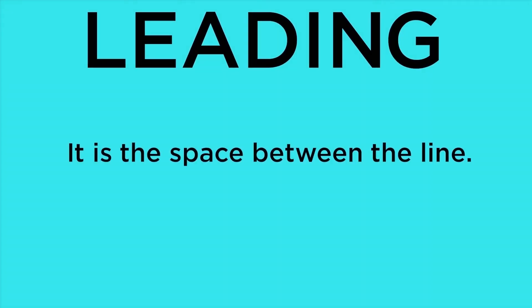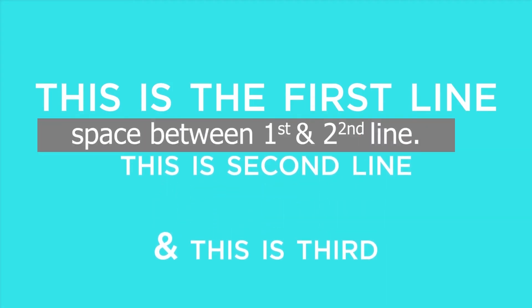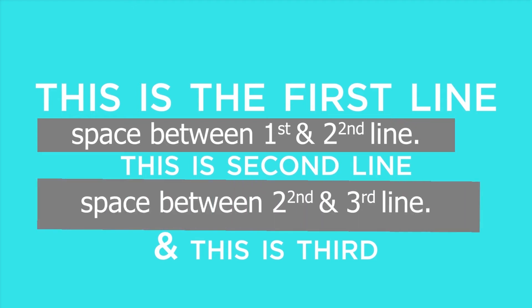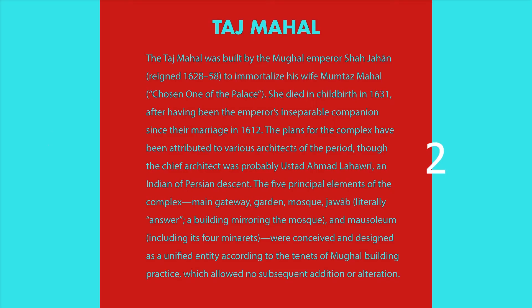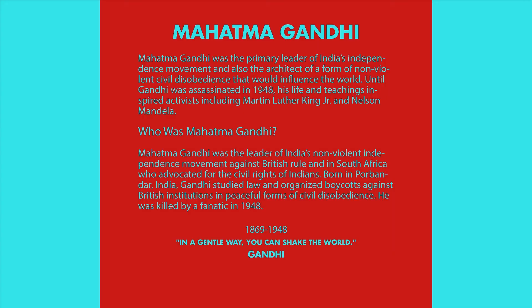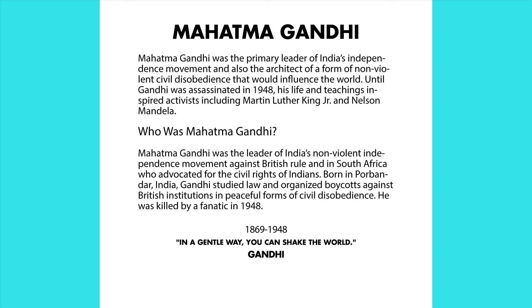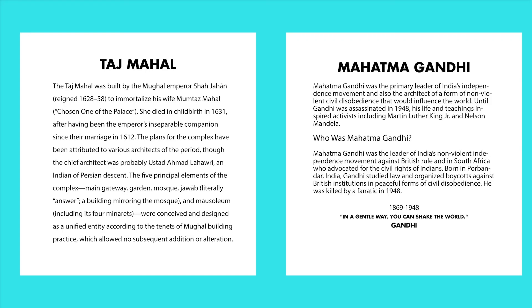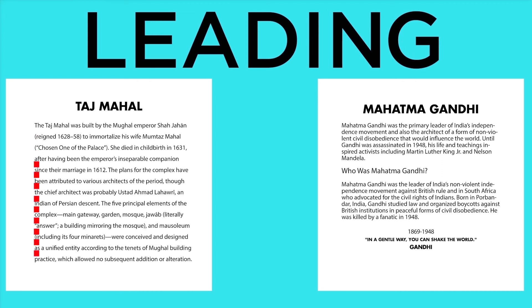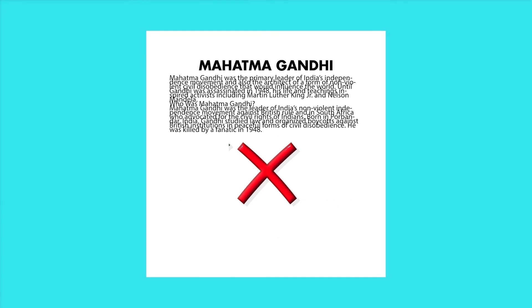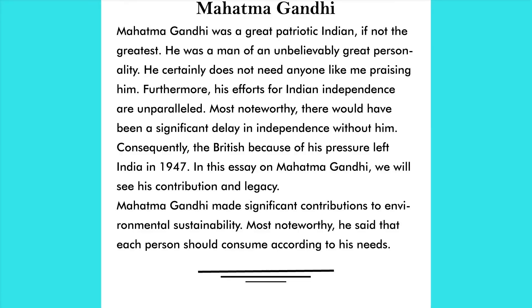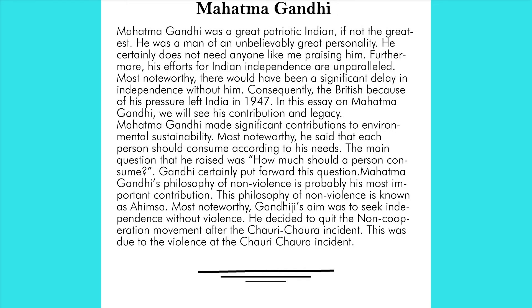Now, leading. Leading is the space between lines. For example, I have three lines here — there is less leading between the first and second line, and more leading between the second and third line. You can use leading in different ways. For instance, I will create two templates — one about Taj Mahal and one about Mahatma Gandhi. The description of Mahatma Gandhi is a little longer than Taj Mahal, and I have to show both on one page. I can increase the leading in Taj Mahal's description to balance the space. But don't overuse leading, as it will look very large. Use it in a limited way. Quick tip: if you use a darker typeface, increase the leading; if you use a lighter typeface, you can reduce the leading.